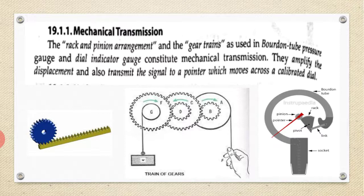These are the figures shown here: the first one is the rack and pinion arrangement, the second one is the gear train, and the third one is the Bourdon tube.